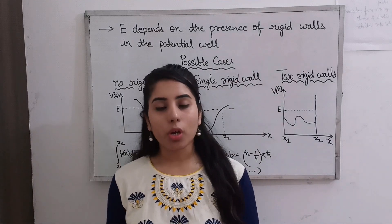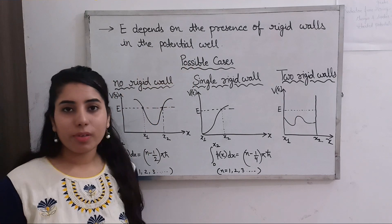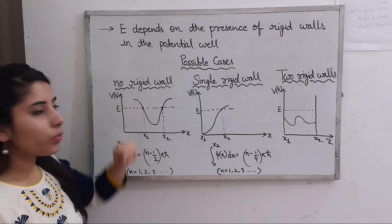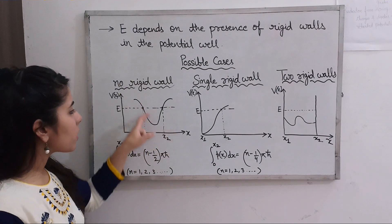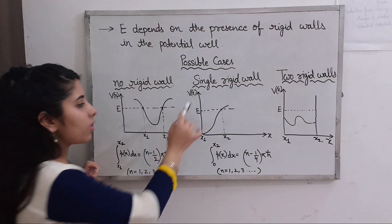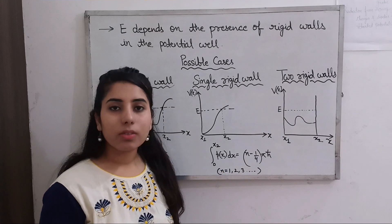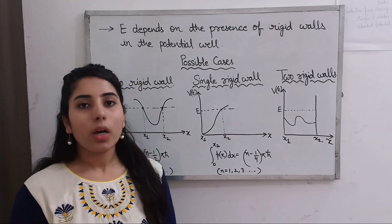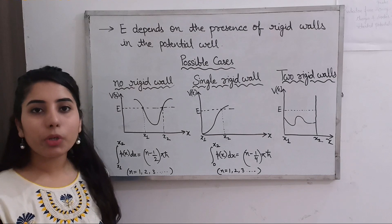The energy E depends on the presence of rigid walls in the potential well. There are possible cases: no rigid wall present in the given potential well, a single rigid wall, or two rigid walls. Sometimes you may have to draw the potential well on your own based on the given potential expressions.